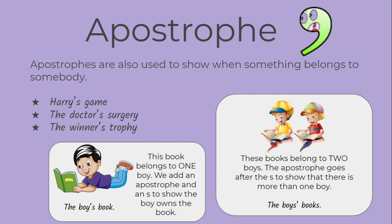In the first picture, there is a boy reading by himself. This book belongs to one boy, so we add the apostrophe at the end of the word 'boy' and then the S to show that one boy owns the book. In the other picture, there are two boys reading. These books belong to two boys. The apostrophe goes after the S at the end, so you can see 'the boys' books.' Boys has the apostrophe after the S, and that shows that there is more than one person that owns those books.